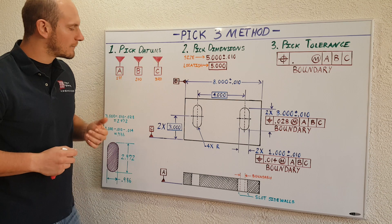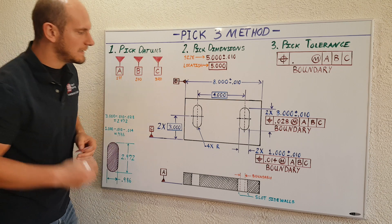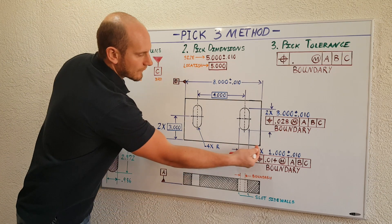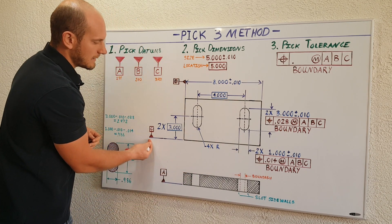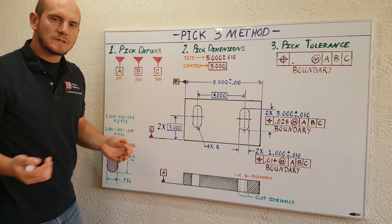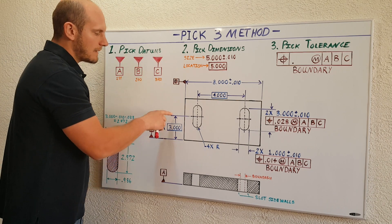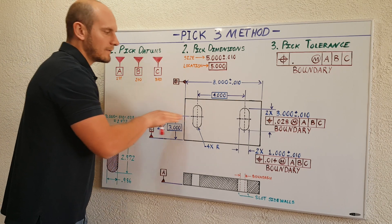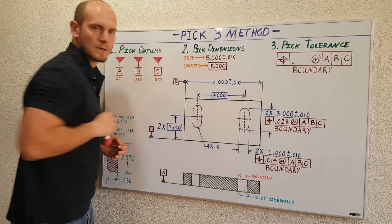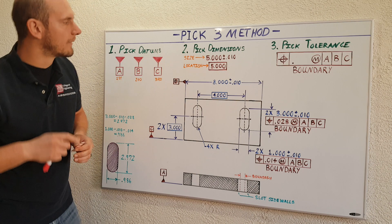For my third datum C, I chose the front or bottom surface of this plate right here. I'm just telling the machinist to start here and then move upwards to finish locating those slotted features.